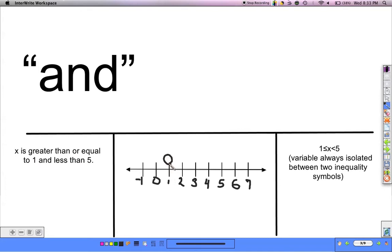I want to draw a circle above 1, and it's greater than or equal to, so I want to close it in. And I'm going to have a line heading to my right because it's greater than, and it says it is less than 5.